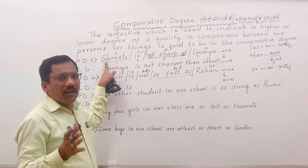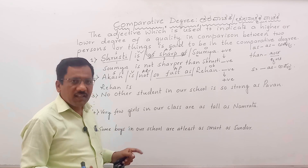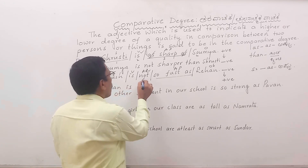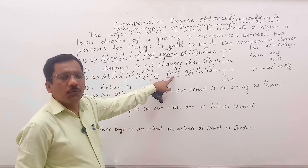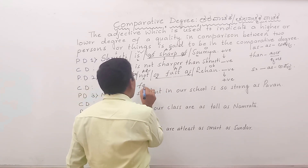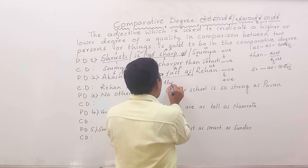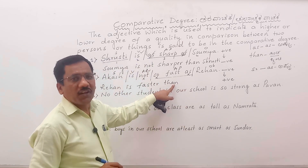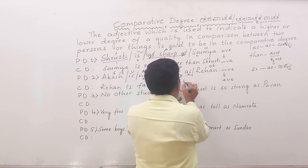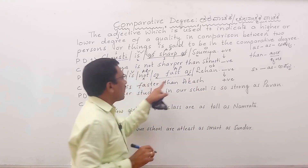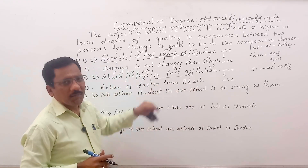If positive degree is positive, it becomes negative in comparative. If positive degree is negative, it becomes positive in comparative degree — this point we must keep in mind. So 'not', 'so', and 'as' are all cancelled, leaving 'fast', which becomes 'faster' in comparative form. Riham is faster than — and after 'than', we repeat the subject of the positive degree sentence: Akash. So the sentence becomes: Riham is faster than Akash.